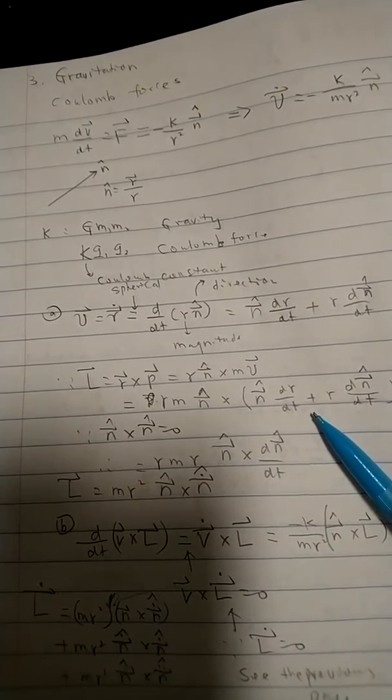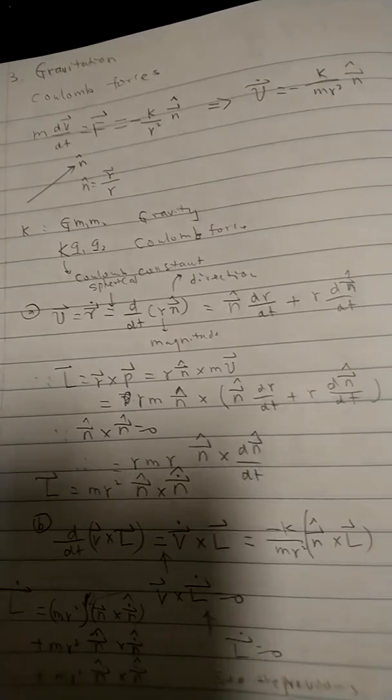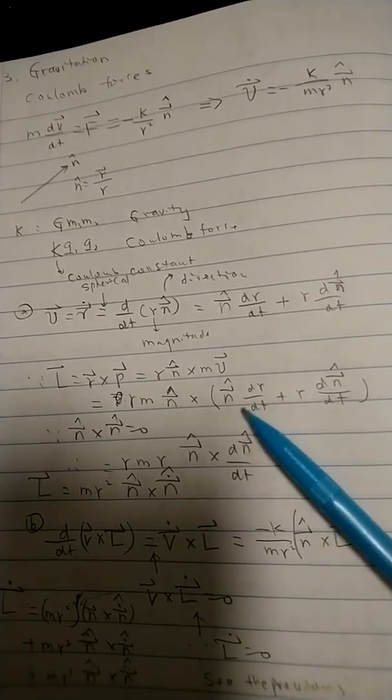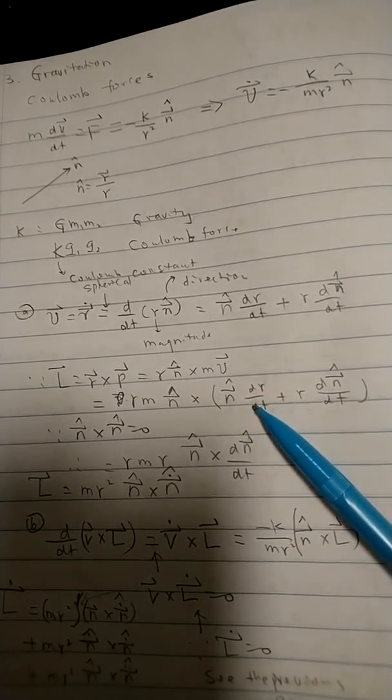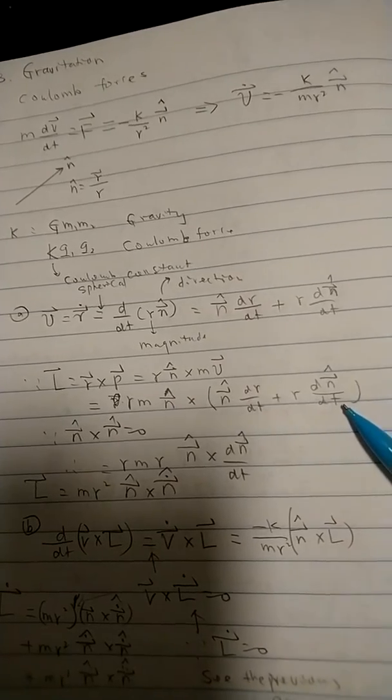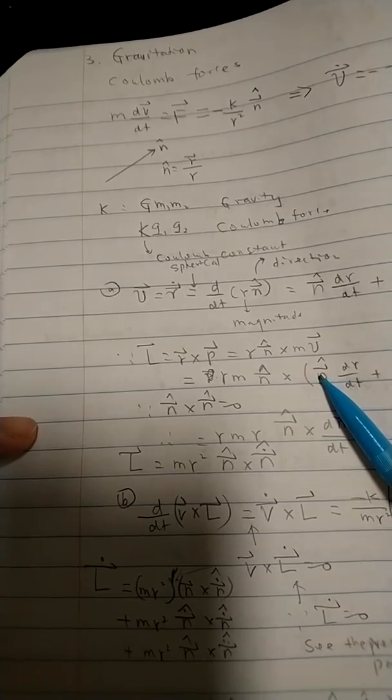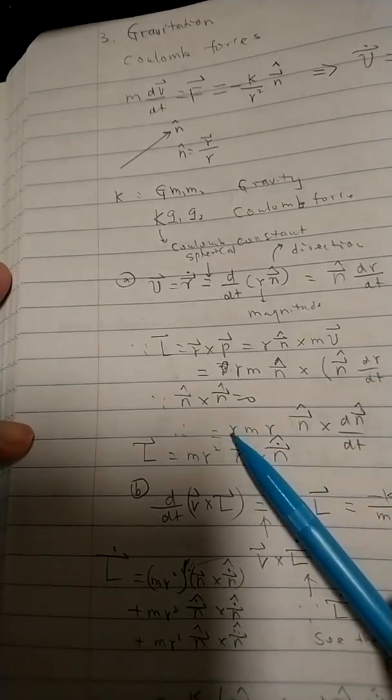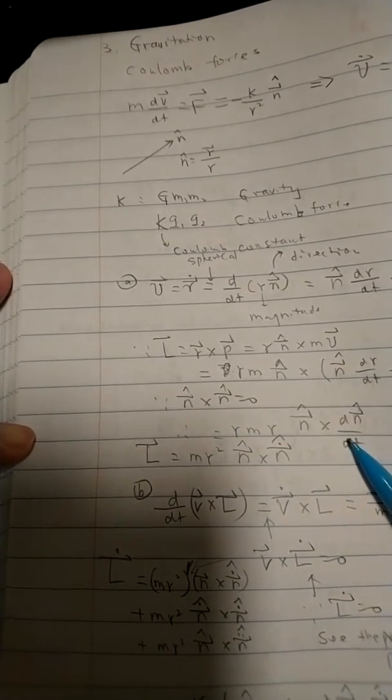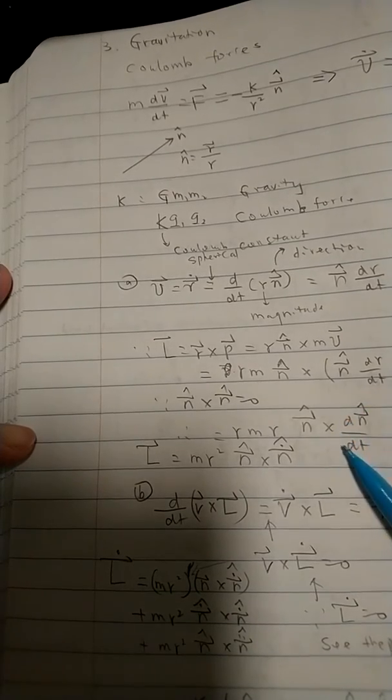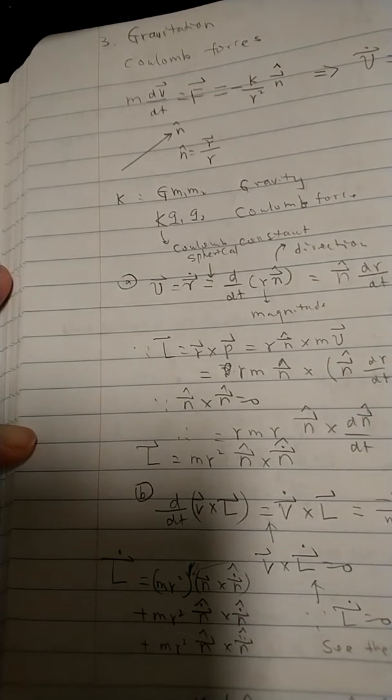And you see something which is very interesting comes out. One is the magnitude change with time, one is the direction which changes with time. The first term has to be zero because you see n cross n has to be zero. So that's why I just wrote it down here. You only have a second term which comes out like this. So this is purely due to the fact that the direction is changing.